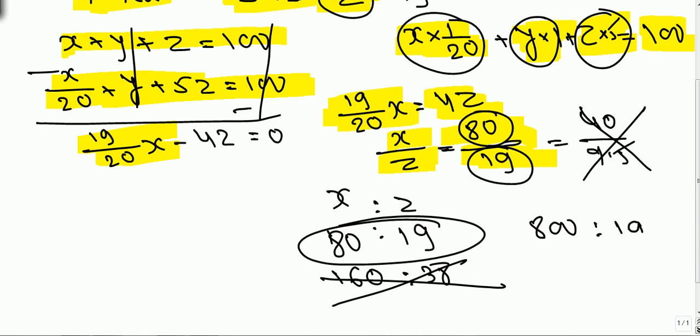But total birds are just 100, so the only possible answer is what we have got.